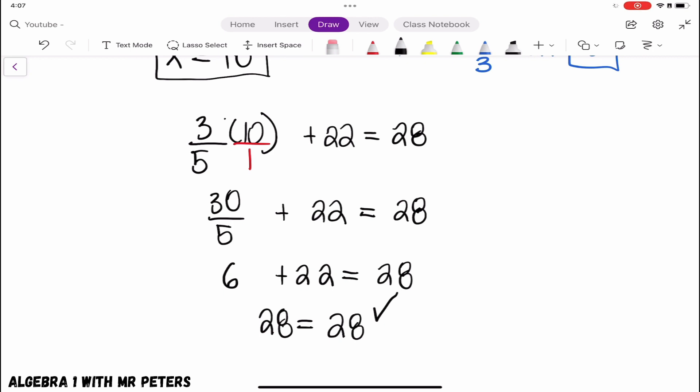So remember guys, when you're solving equations, four very important steps. Locate your variable, understand what the problem was going on in the problem. Isolate the variable and get it on one side of the equal sign by itself.